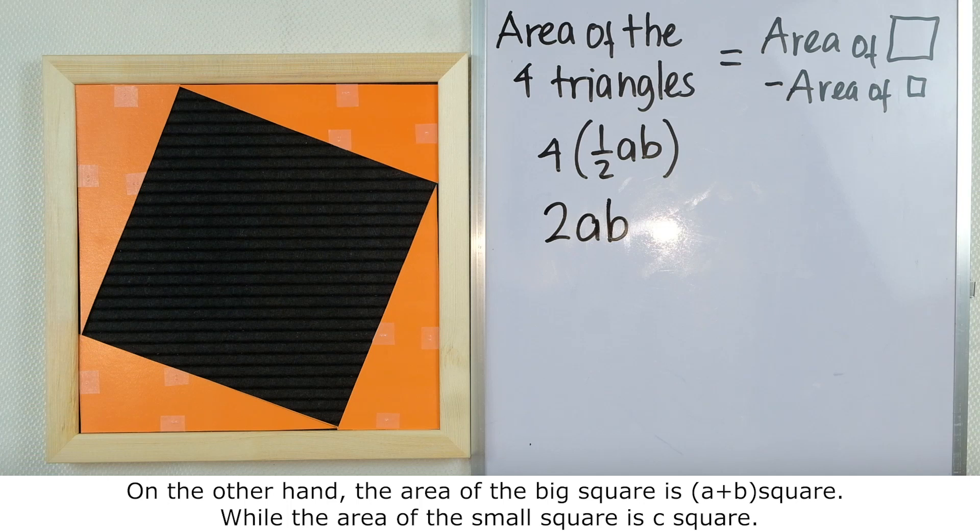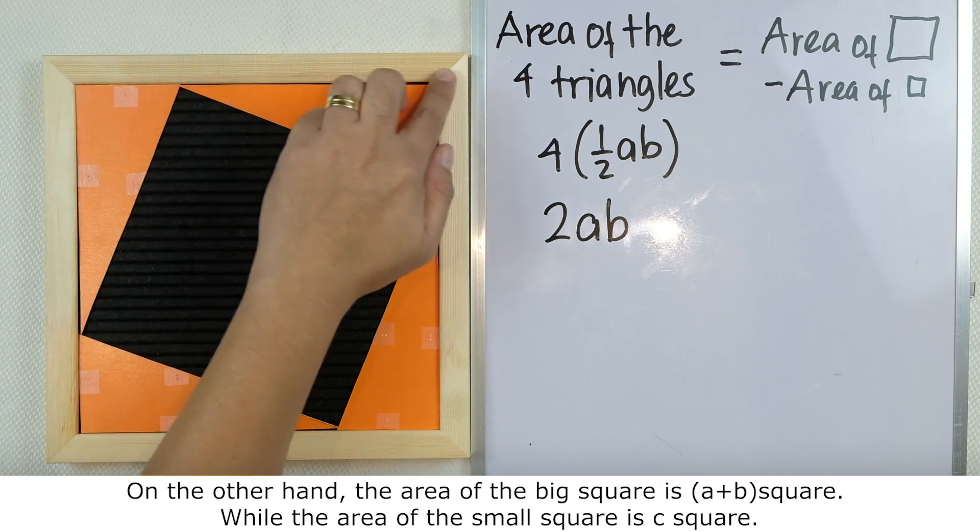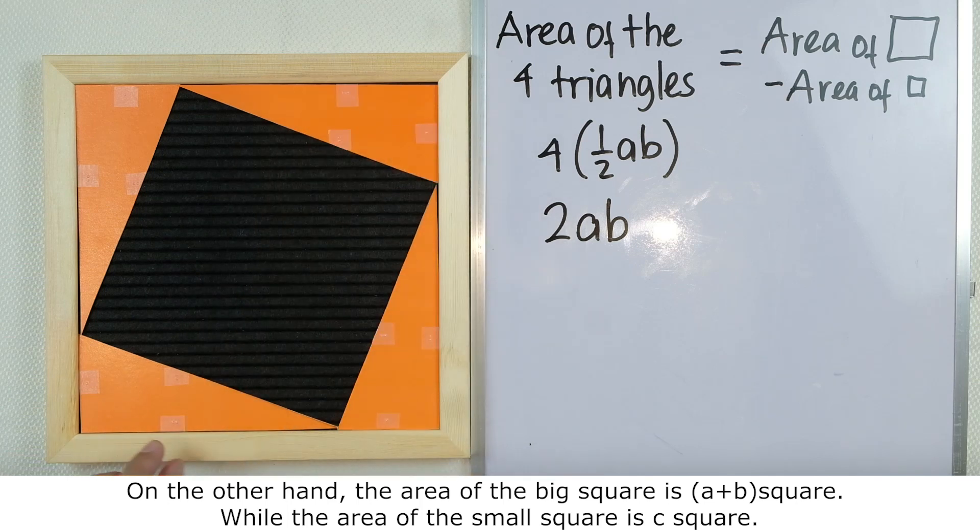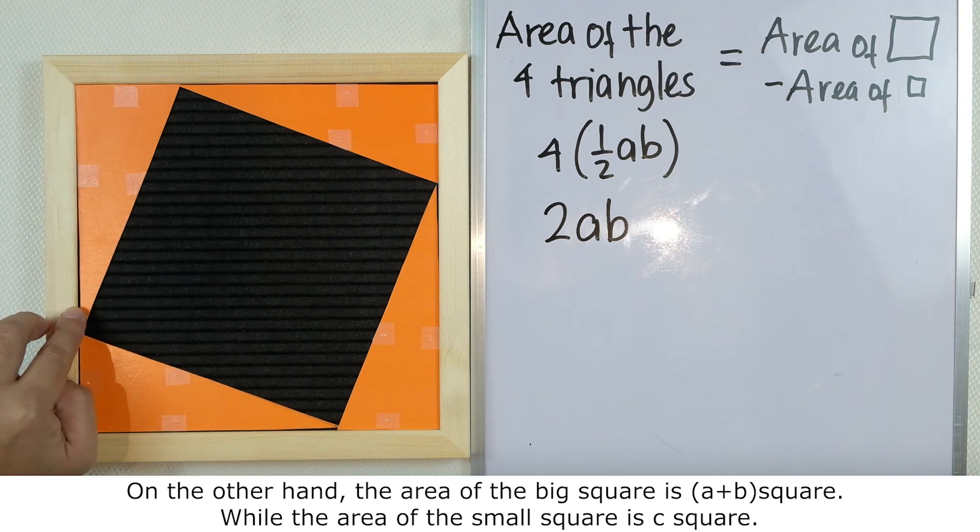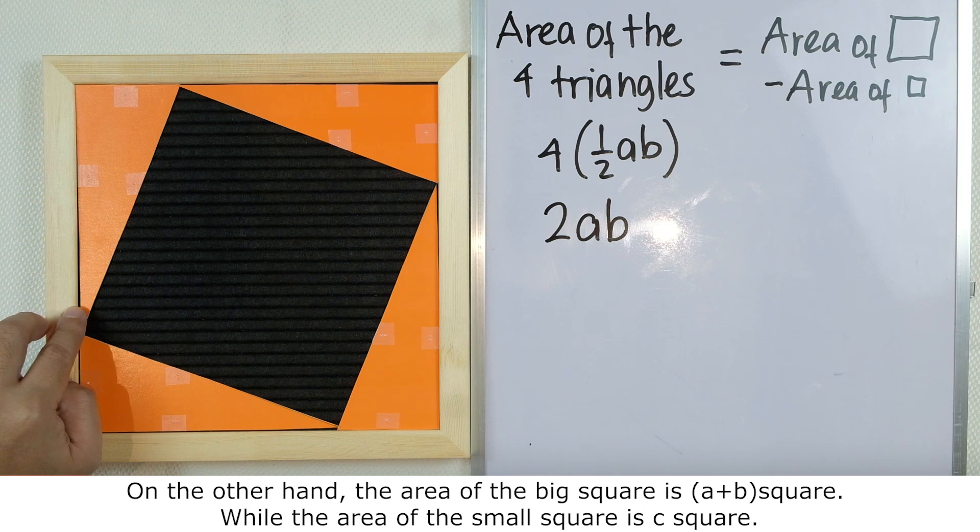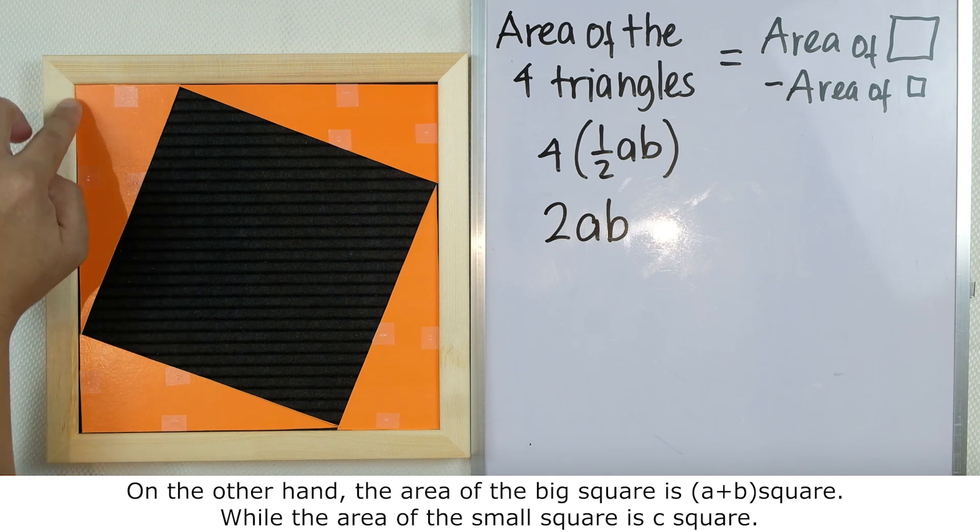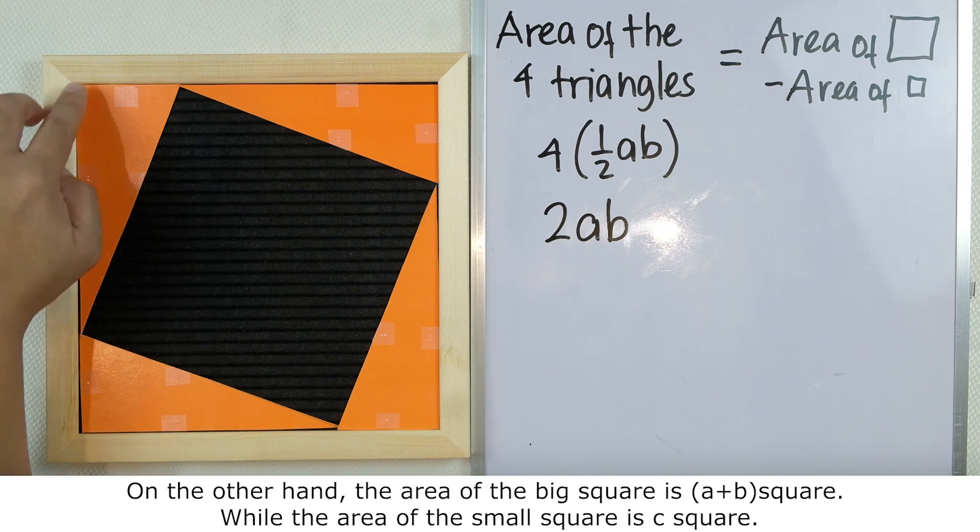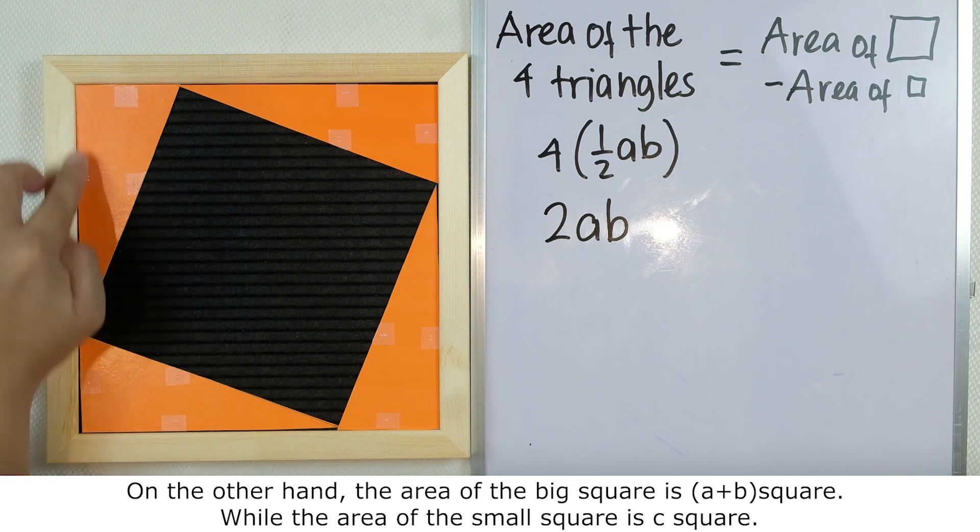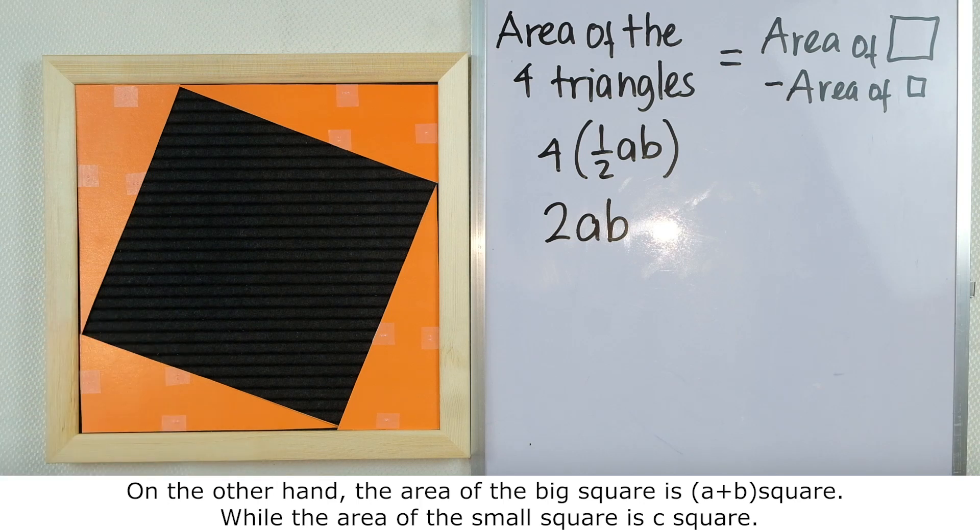On the other hand, the area of the big square is (a+b)². Since a and b are the legs of the triangle, the length of this side of the big square is just the sum of a and b. That's why we have (a+b)².